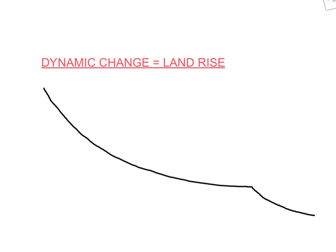There are two main causes of rejuvenation. The first of these is dynamic change. This is when an upwards movement of the land raises the height of the river above sea level, which changes the long profile. For example, there is now a nick point in the lower course. This increases the gravitational potential of the river, giving it more energy to erode downwards towards the new base level.